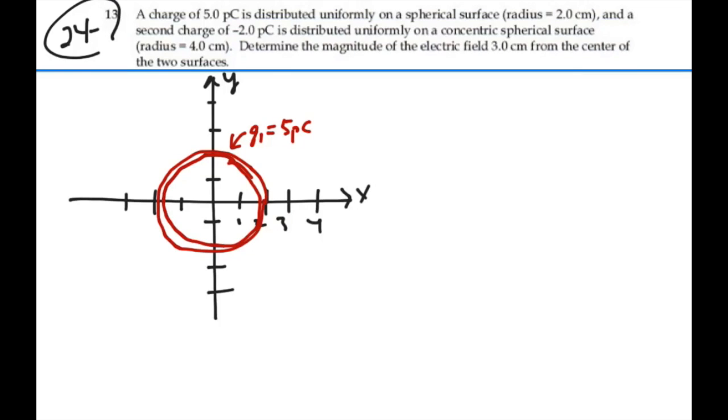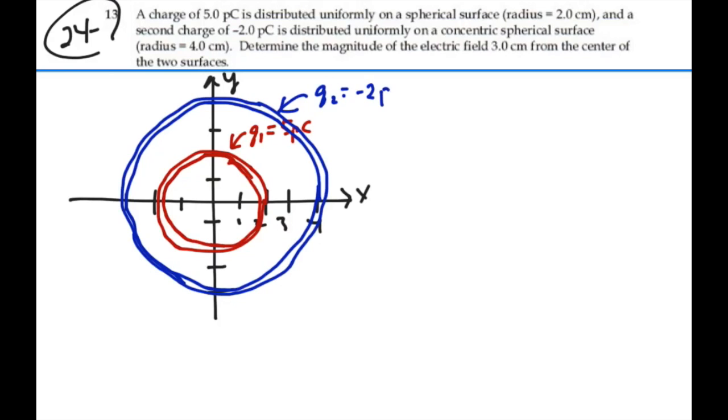Then we have a second sphere, radius 4, and we have charge residing on the surface of that sphere. Now since it's residing on the surface of that sphere, it also is acting like a shell of charge. There's no charge internal on that sphere. The value of charge on that sphere is minus 2 picocoulombs. So q2 is minus 2 picocoulombs.